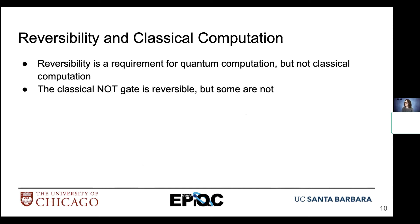Reversibility is a requirement for quantum computation, and this makes quantum computation different from classical computation, because classical computation is not inherently reversible. There are some classical operations that are reversible — for example, the classical NOT gate is essentially equivalent to the quantum NOT gate and is reversible. But other classical operations are not reversible.